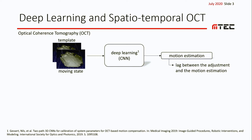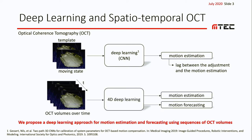However, performing the actual compensation introduces a lag between the adjustment and the motion estimation, which can be problematic if fast and large motions occur. One approach to overcome this problem is motion forecasting. Therefore, we propose end-to-end deep learning methods for motion forecasting and estimation using entire sequences of OCT volumes.